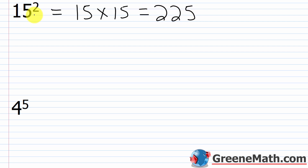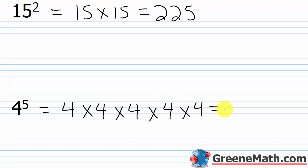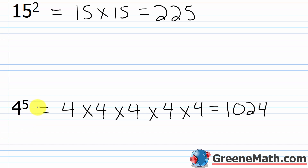What about 4 to the 5th power? This is 4 times 4 times 4 times 4 times 4. It's pretty easy: 4×4=16, 16×4=64, 64×4=256, 256×4=1024. We'll learn later that 4 to the 5th power is the same as 2 to the 10th power, which probably doesn't make sense yet, but it will. The answer is 1024.